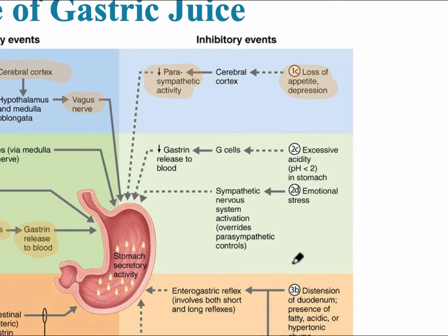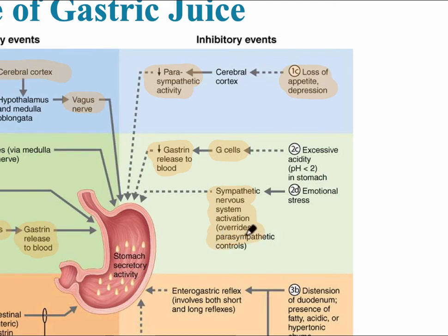The inhibitory effects on the gastric phase are the exact opposite — less gastrin released into the blood via the G cells. The sympathetic nervous system can drive this, and excessive acidity lower than pH 2 is an example of this, as is extreme emotional stress.